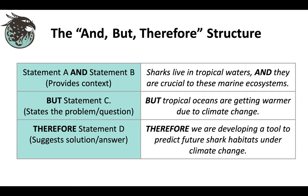For example, from my own research: sharks live in tropical waters and they are crucial to their ecosystems. Then you present the problem or question — the 'but' part: but tropical oceans are getting warmer due to climate change. And then you present your possible solution or answer — the 'therefore': therefore, we are developing a tool to predict shark habitats under climate change. So you have a clear structure: context, then problem, then proposed solution — that's usually the first half of the abstract, then you go into results and conclusions.